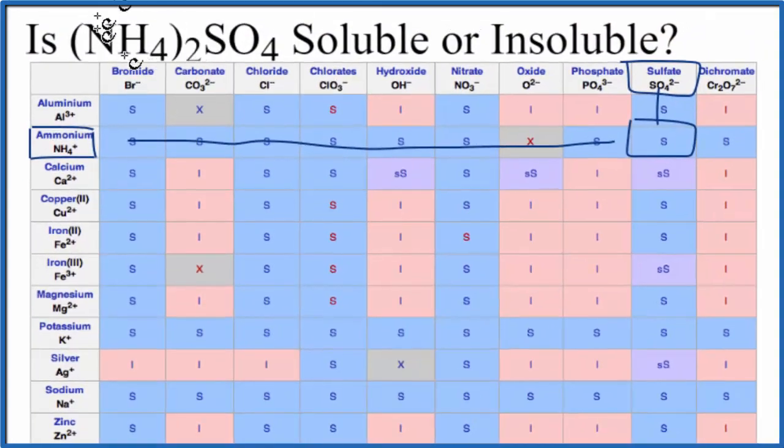And I should say there'll be two ammonium ions that are dissolved in water there because we have the subscript two here. So according to our chart, this ammonium sulfate should be soluble in water.